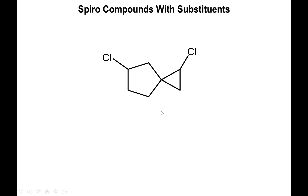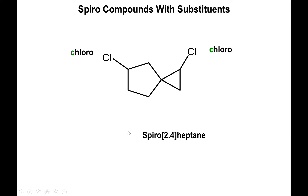We recognize this is a spiro compound because we have two fused rings sharing one bridgehead. We have four carbons on the left side and two carbons on the right side, so we label in ascending numerical order: spiro 2.4 in brackets. Two plus four is six, plus one more is seven, so this is spiro[2.4]heptane. The substituents are two chloro groups, so the name will include dichloro in front of spiroheptane. A hyphen is only required when separating numbers from letters.